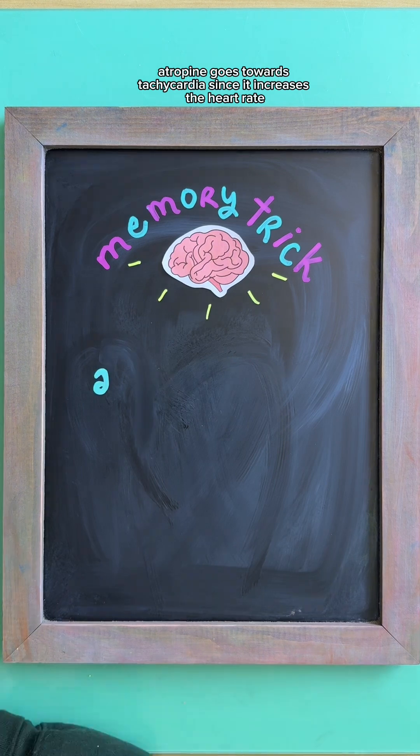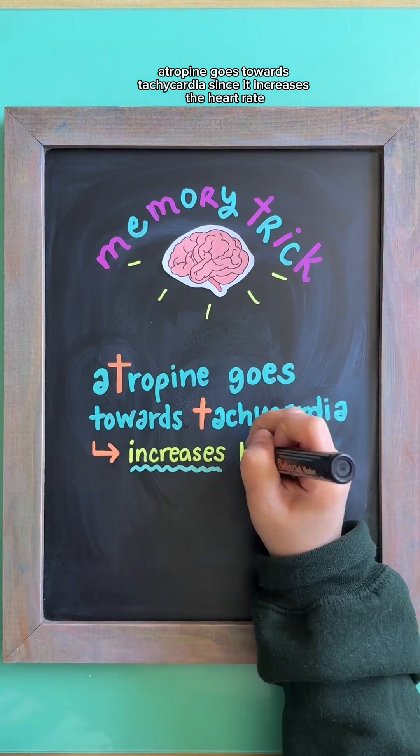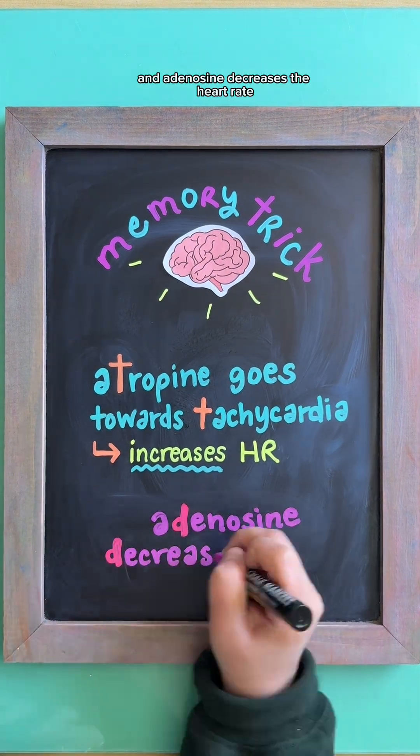To help remember, think atropine goes towards tachycardia since it increases the heart rate and adenosine decreases the heart rate.